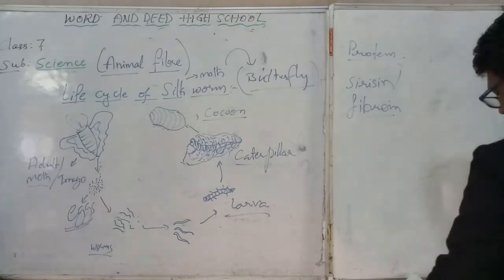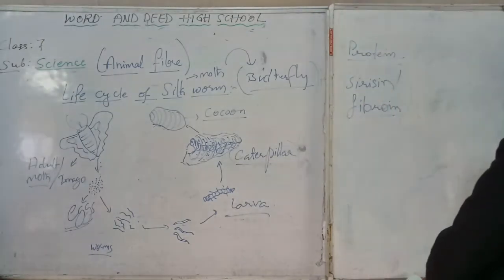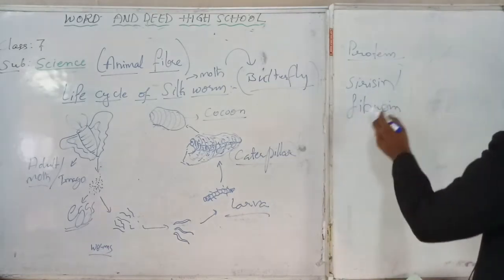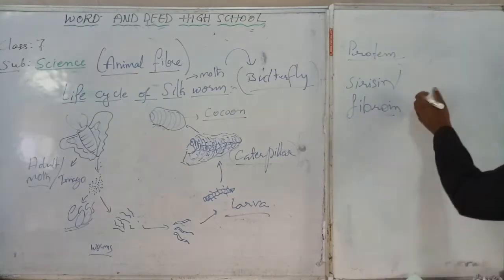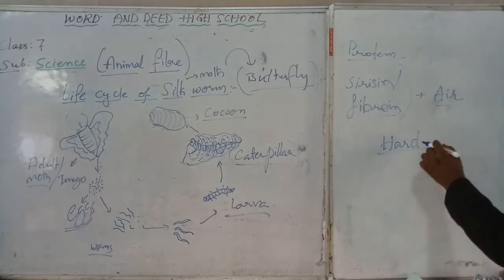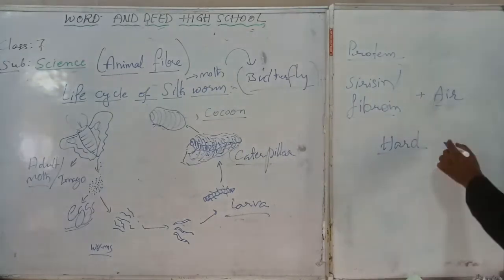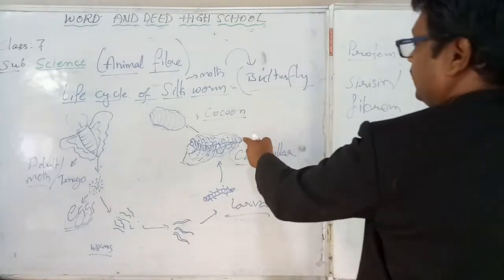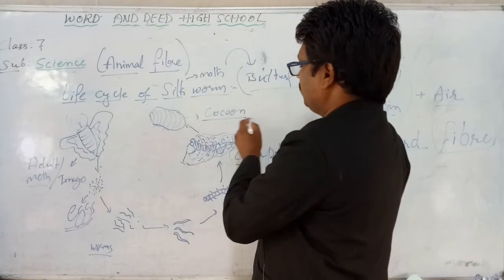That protein is sericin or fibroin — this type of chemical composition. It is not artificial; it's natural, it's biochemical, it's a protein substance. The composition of the saliva is sericin and fibroin. When it is exposed to air it becomes hard, and the worm spins this hard fiber around the body. Finally, it completes spinning to cover its whole body, and that is called a cocoon.